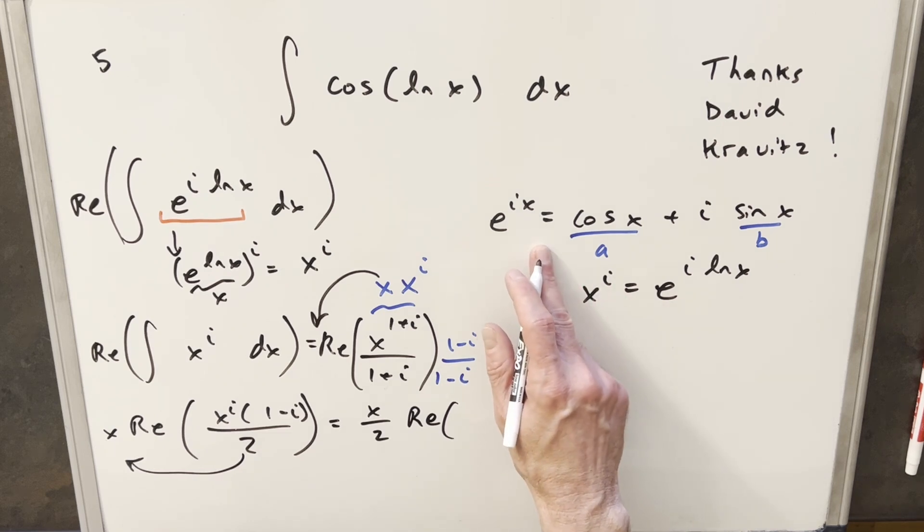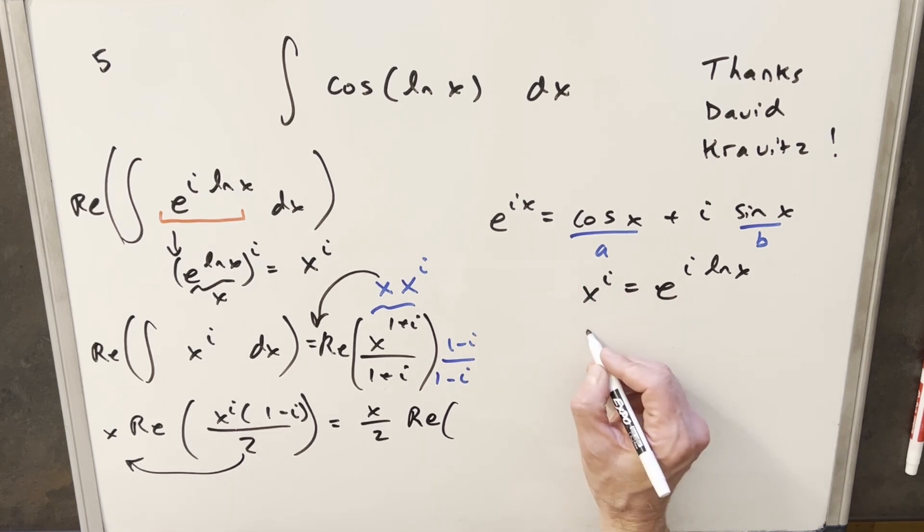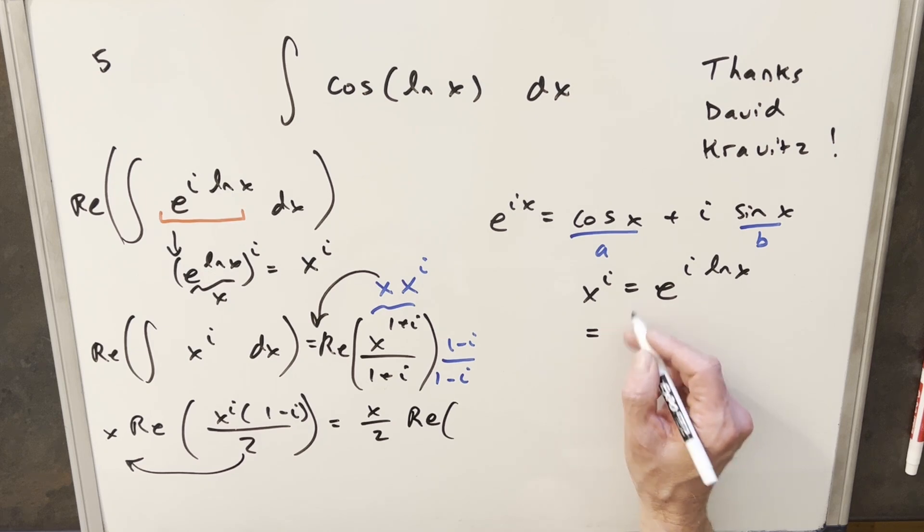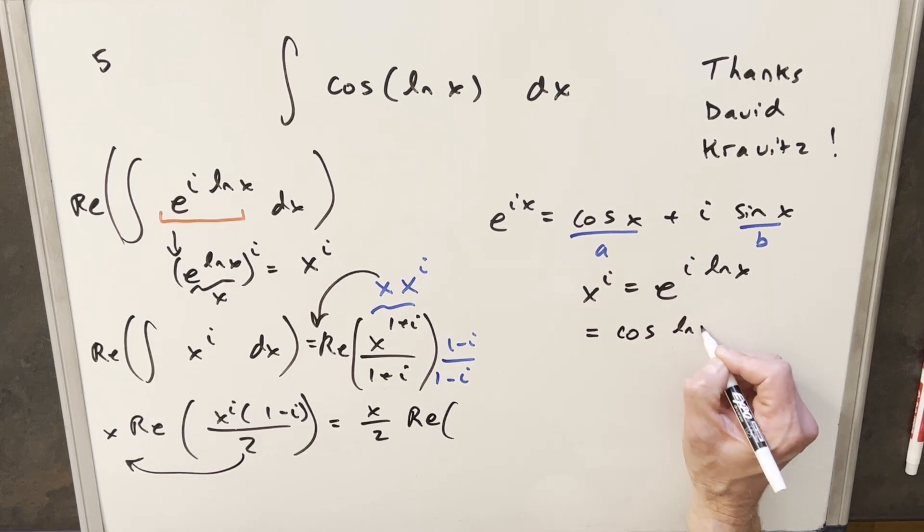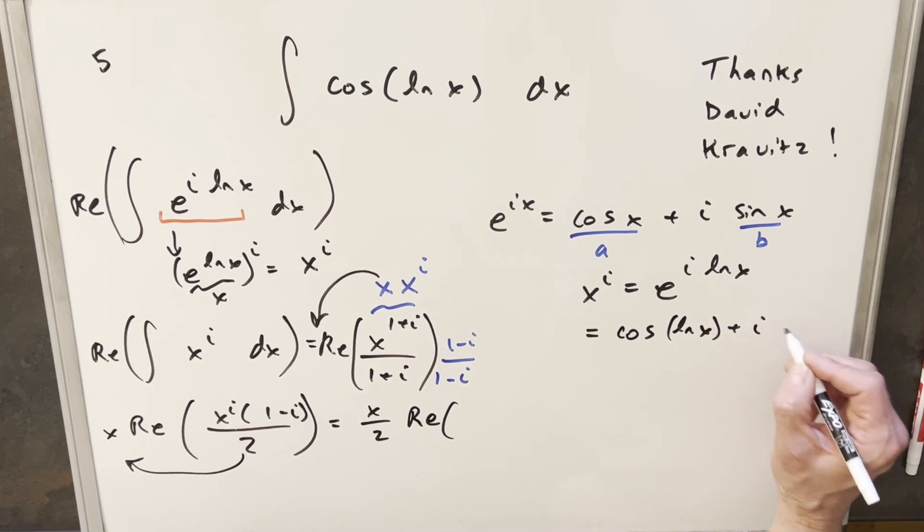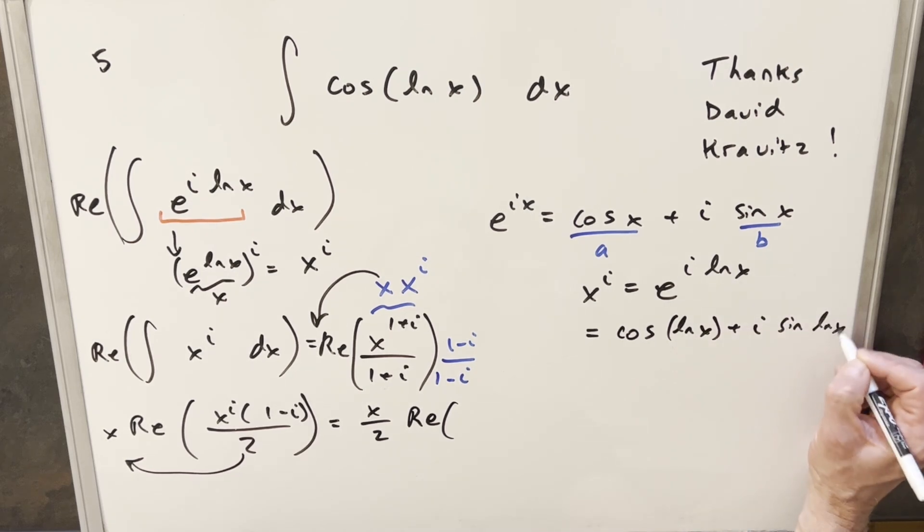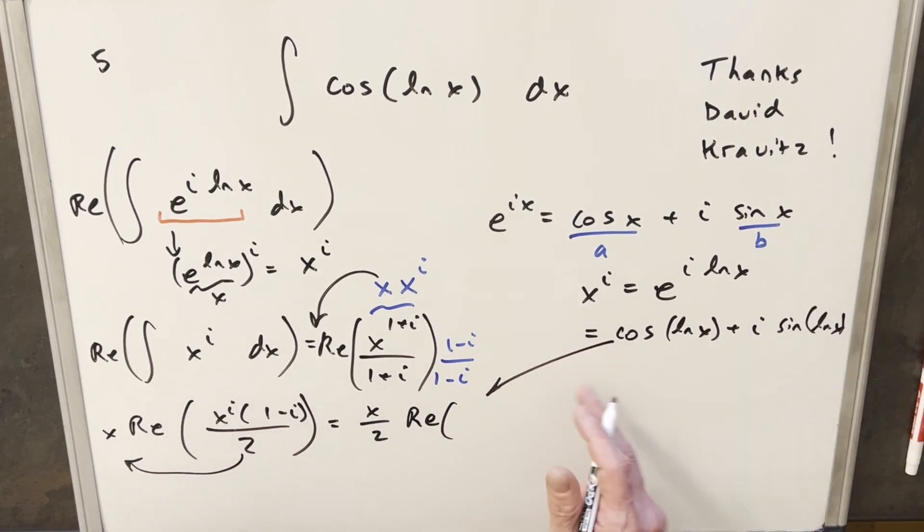it's perfectly in this form for Euler's formula. So I can actually rewrite this more. And I can actually write this in this form as cosine ln x plus i sine ln x. So what I'll do for x to the i is I'll take it in this form and write it back into our real part.